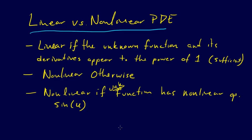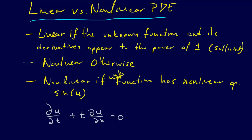Now let's go through a few examples to get a feel for classifying linear versus nonlinear. The first example: if we have ∂U/∂T plus T times ∂U/∂X equals 0 — is this linear or nonlinear? It actually turns out that it's linear. You might think it's not linear because we have a T multiplied by a U term, but it's not T times U — it's T times a derivative of U. We could even have T squared times ∂U/∂X; that's totally fine because T is not the unknown function U.